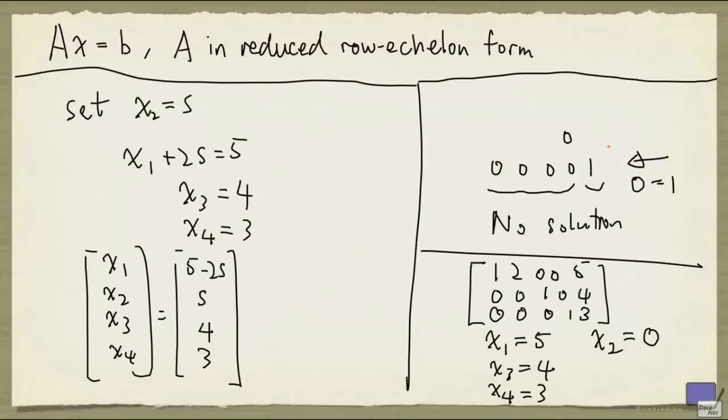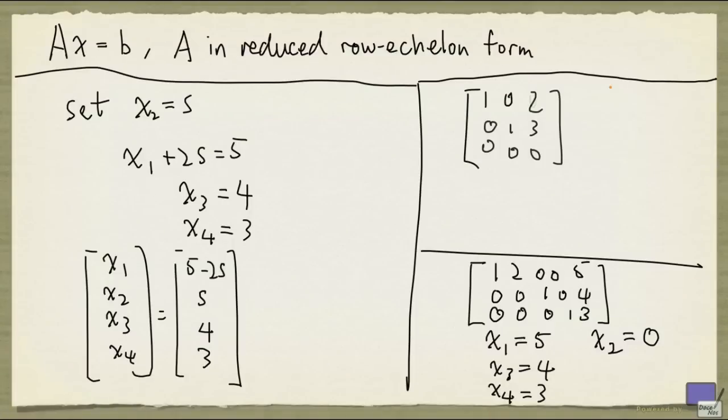So here's an example where that happens. Say my augmented matrix looks like this. Now notice that the third row is all zeros. This doesn't create any problem because this is 0 equal to 0, and it's not going to affect the choices that we make for x1 and x2. But here, there's no free variable. Every column is a pivot column. So x1 has to be equal to 2, and x2 has to be equal to 3.